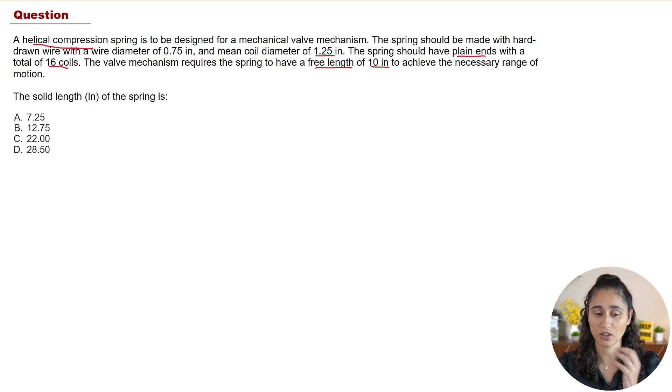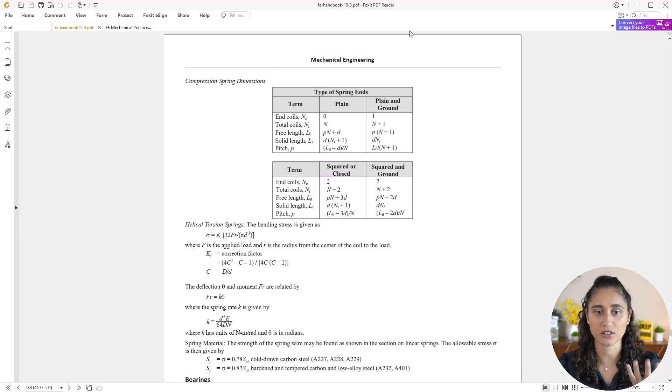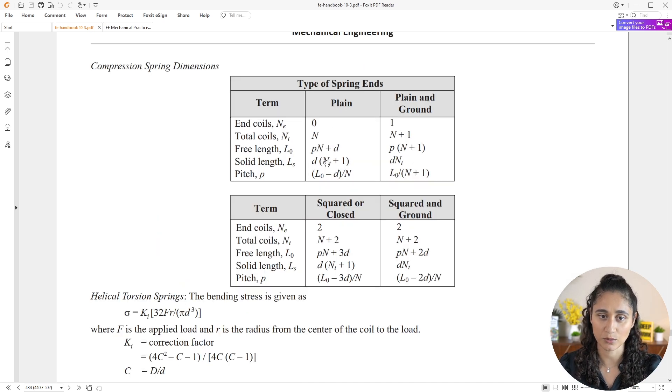So to determine the solid length of the spring, what we're going to do is go to this table here and look for the equation. Now this table we use it depending on the type of spring ends. And if you remember, in the problem we have plain ends, right? So which means we're going to take a look at this column here.